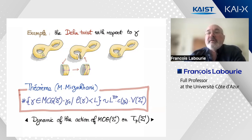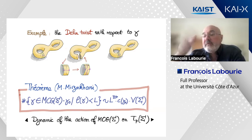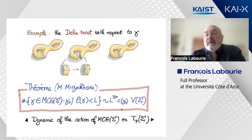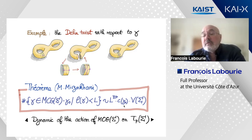Mirzakhani's counting result: you want to count the number of simple closed curves in an orbit of the mapping class group. You start with a curve γ₀, apply the mapping class group to it, obtaining infinitely many simple curves. You count those whose length is less than L. The result is that this is asymptotic, as L→∞, to L^(3P) · V(σ) — the same constant as before — but now multiplied by a constant depending on the topology of the starting curve γ₀.